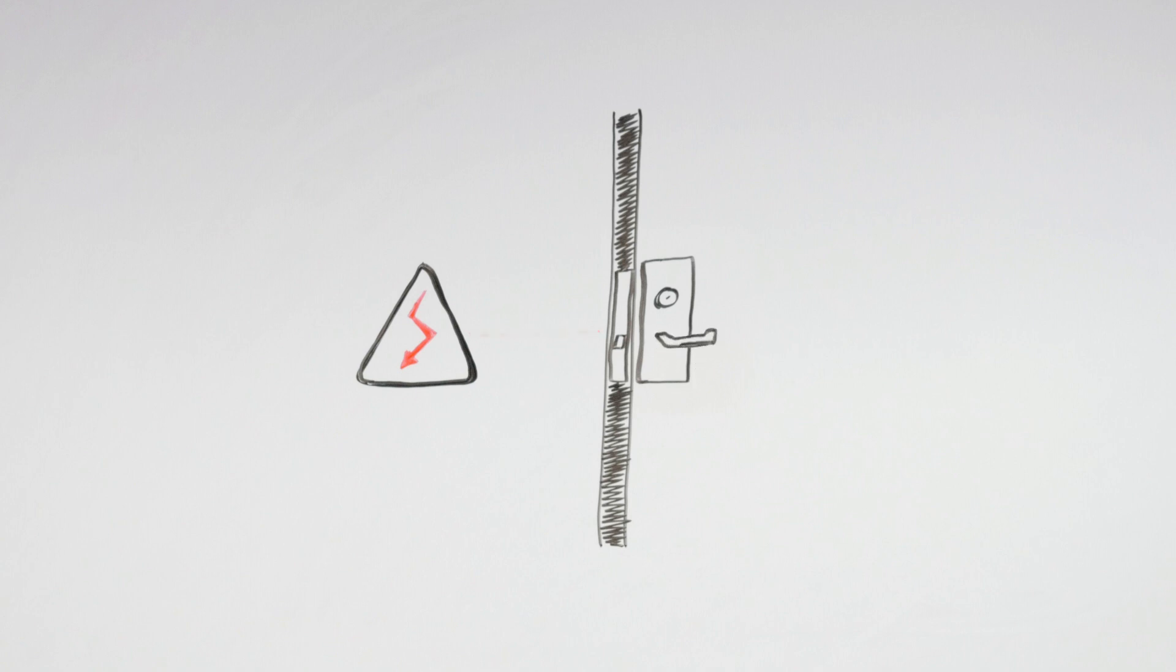Fail safe electromechanical lock sets are good for fire-rated stairwell doors that require re-entry in the event of a fire alarm. During a fire alarm, the stair side is unlocked so anyone using the stairwell can enter a floor in case the stairwell becomes unusable.